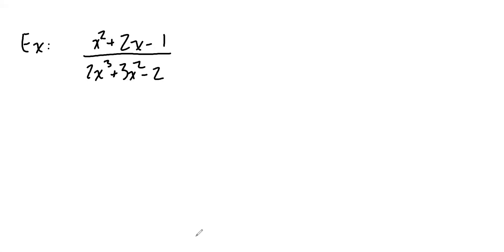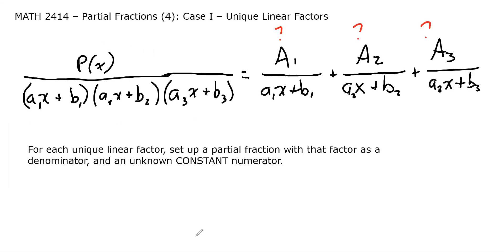You may recognize this rational function from the video about the requirement for degrees: X squared plus 2X minus 1 over 2X cubed plus 3X squared minus 2X. Notice this does satisfy the degree requirement in the sense that the denominator has a larger degree than the numerator. In order to do a partial fraction decomposition, though, our denominator must be factored.